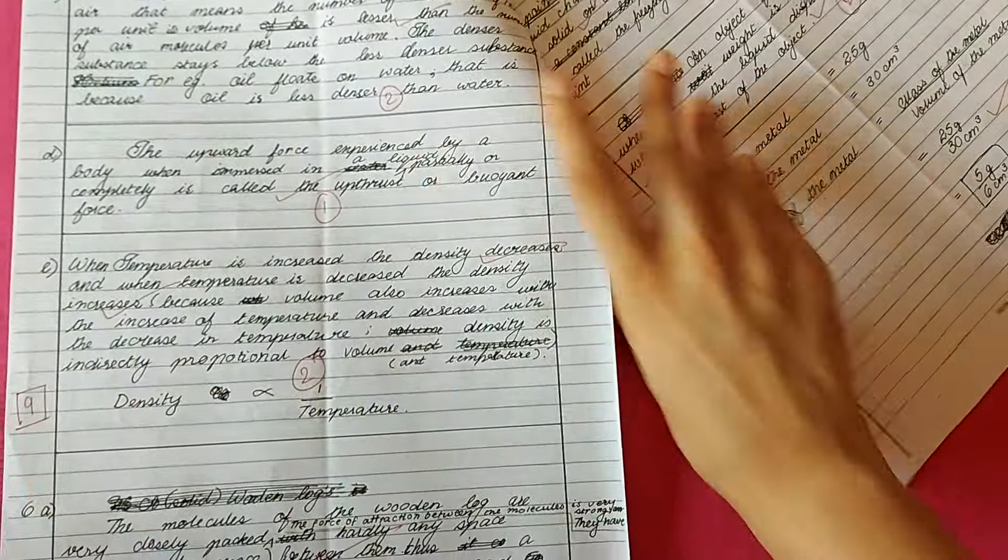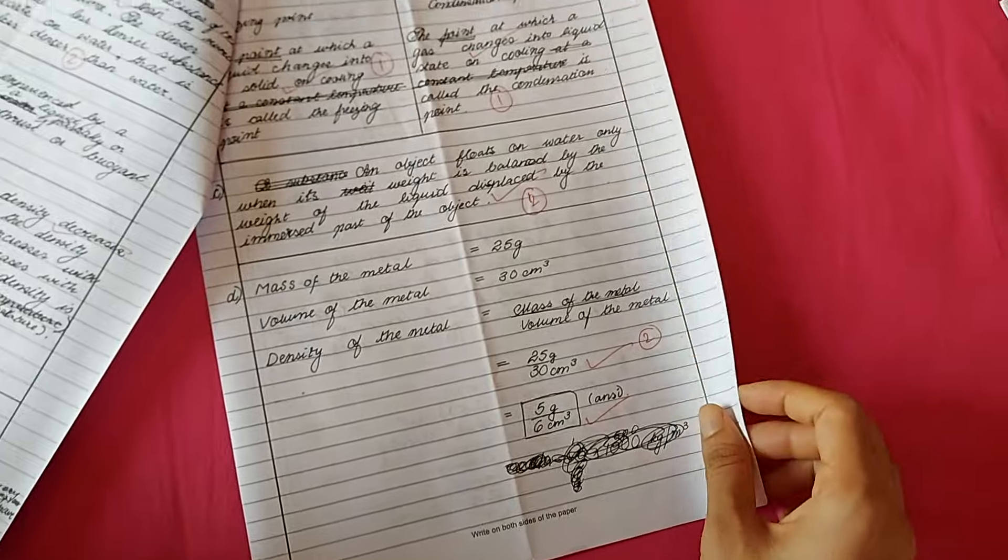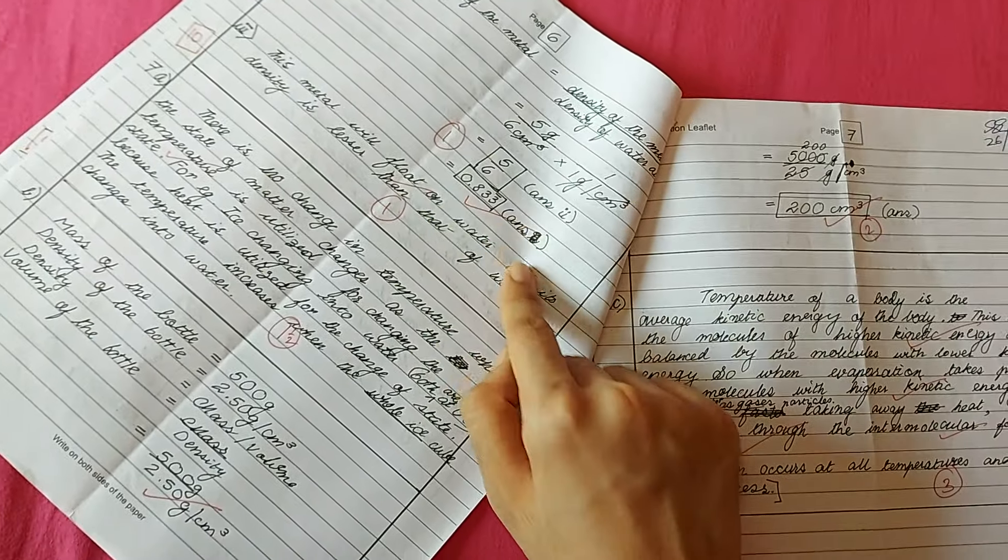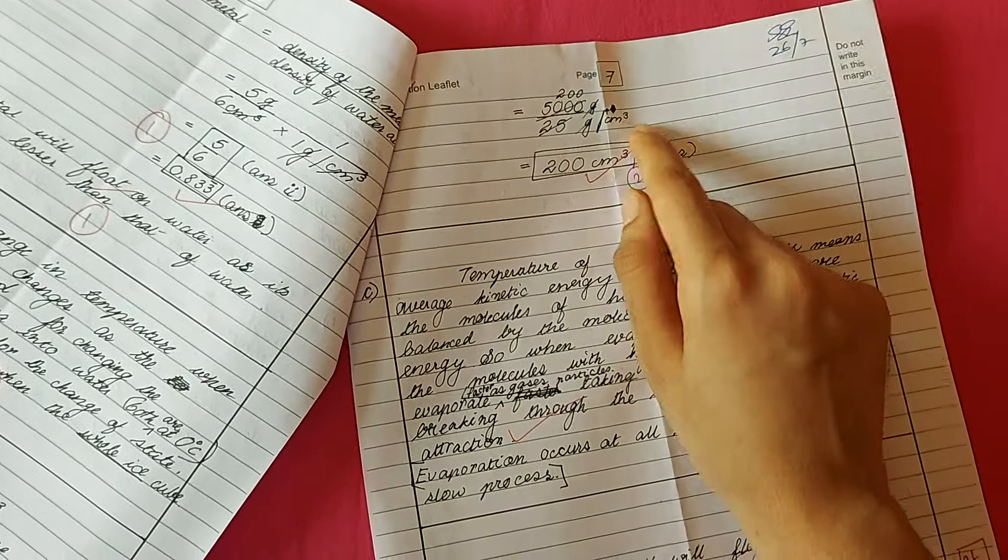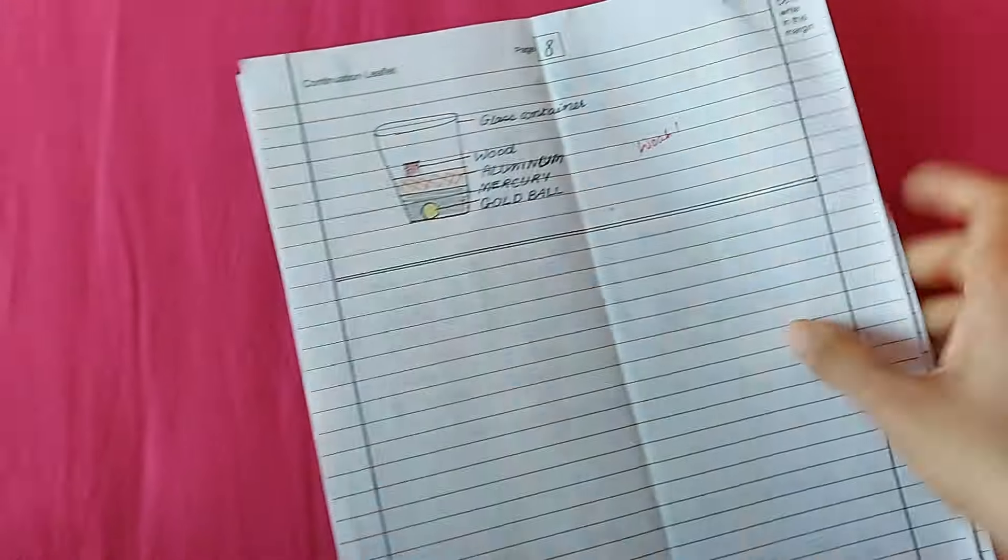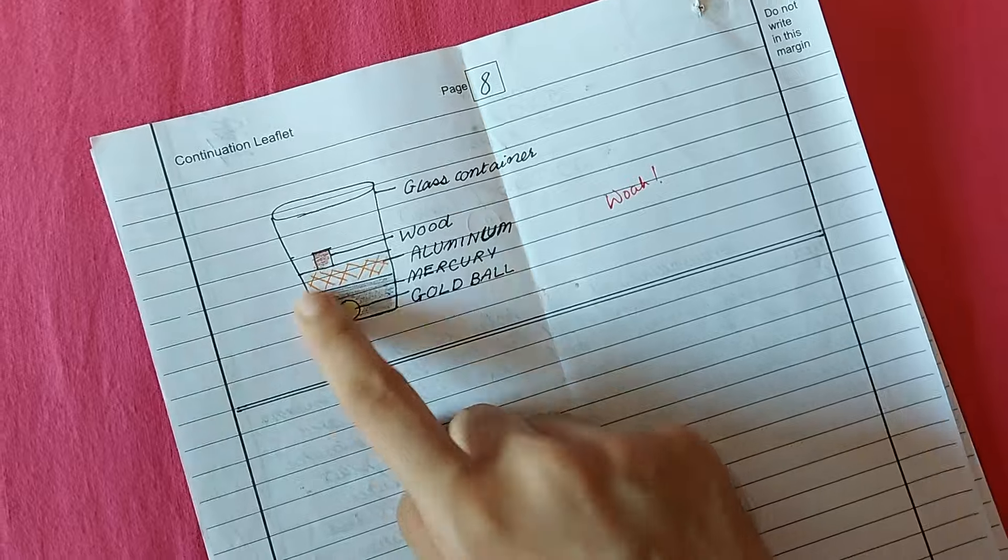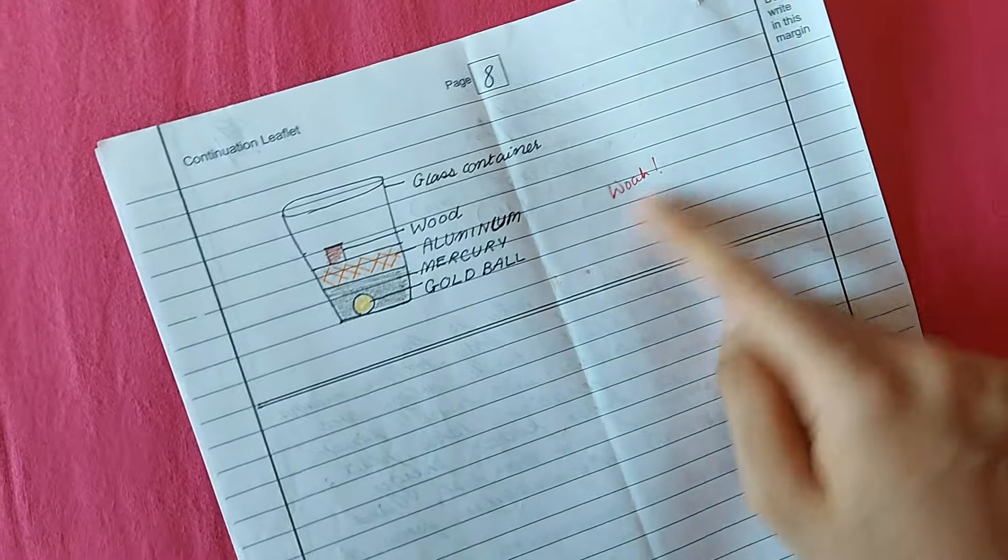After every answer, just make an ending line. Try to avoid cuttings again because if you make cuttings you will lose marks. Make boxes on your final answers with a pencil. Make it very carefully, don't make it look ugly. If there is any diagram, just make a diagram, the teacher will like it.